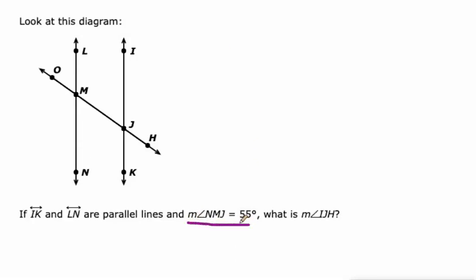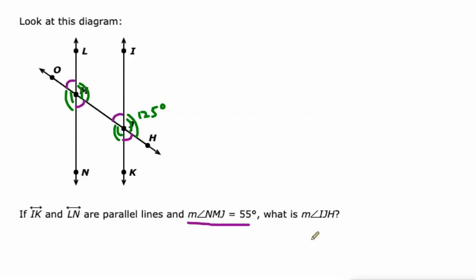The measure of angle NMJ is 50 degrees — it's this one. LMO is vertical to NMJ, so equivalent. IJM is an alternate exterior angle, so congruent. HJK is a corresponding angle to NMJ, so also congruent. All of the other ones are 180 minus 55, which is 125 degrees — every other angle. So IJH is 125 degrees.